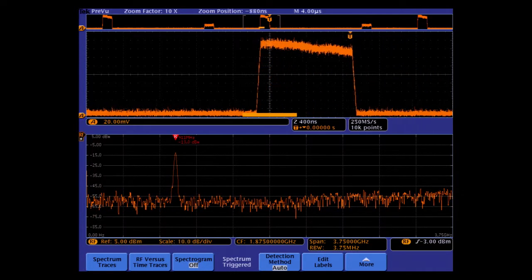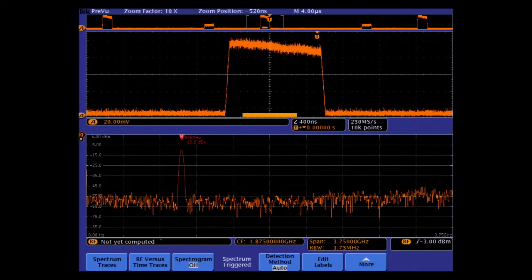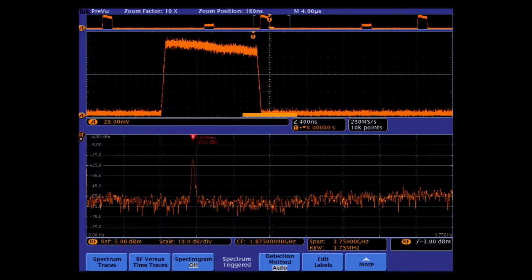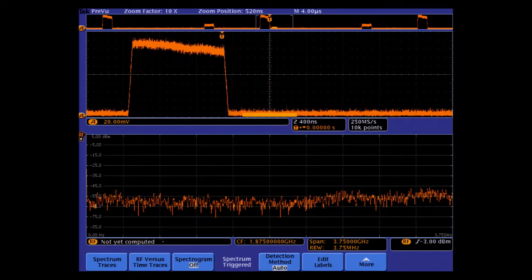Here we see the spectrum over a portion of the pulse selected. Because this is a linear frequency modulated pulse, we are not seeing the entire frequency bandwidth for each pulse. Rather, we are seeing a portion of the pulse's spectrum.